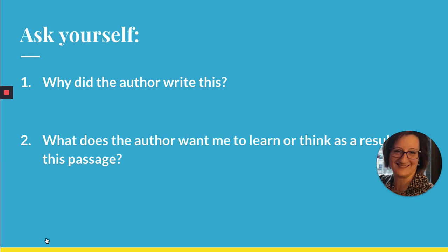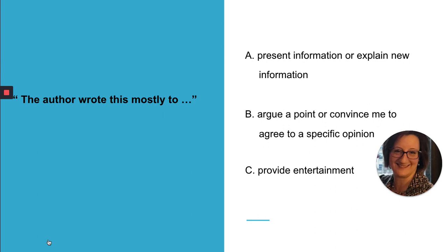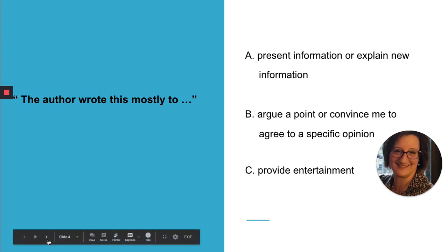Once you're done reading, you can ask yourself this simple question: the author wrote this mostly to — A, present information and explain new information; B, argue a point or convince me to agree to a specific opinion; or C, provide entertainment. One of those three answers will help you determine what the reason is.